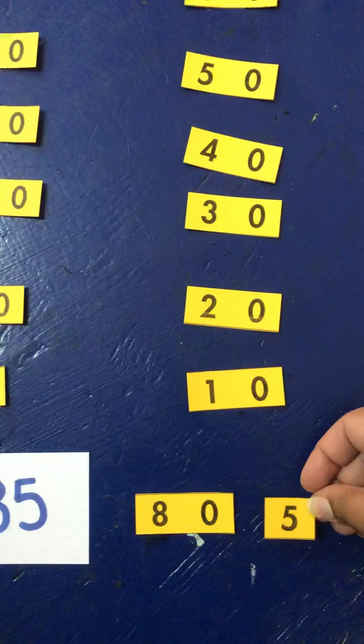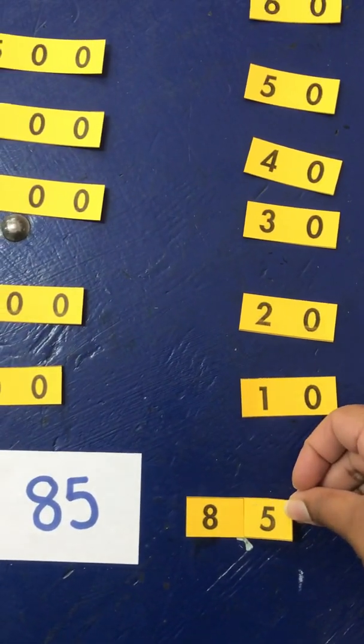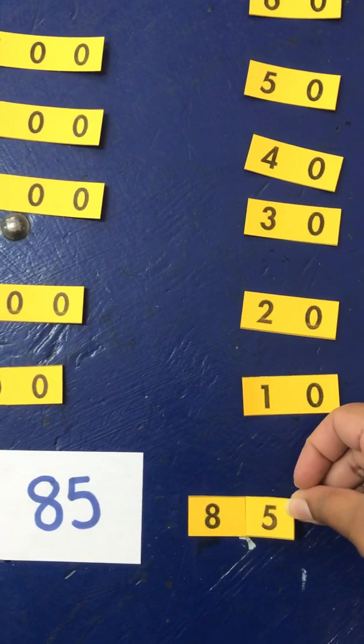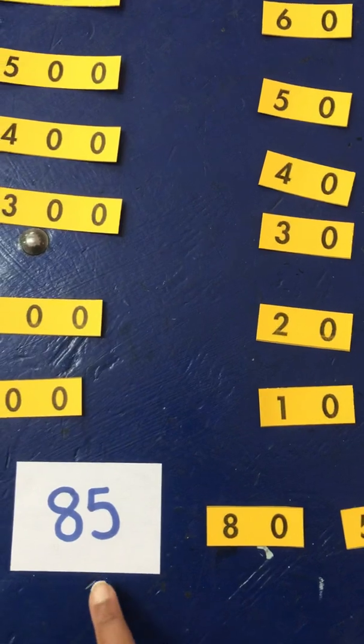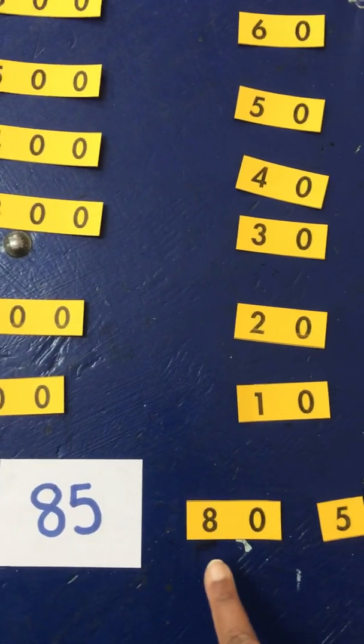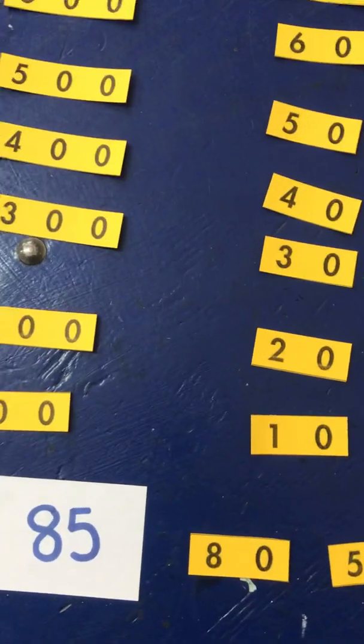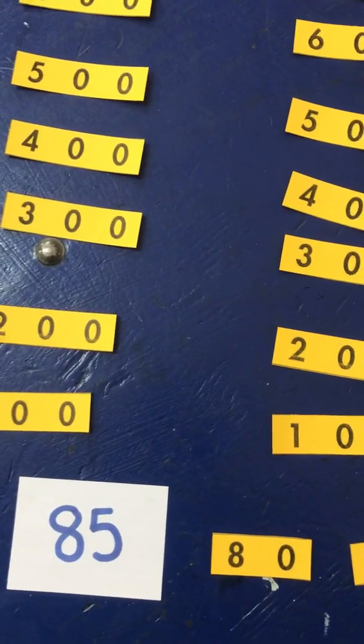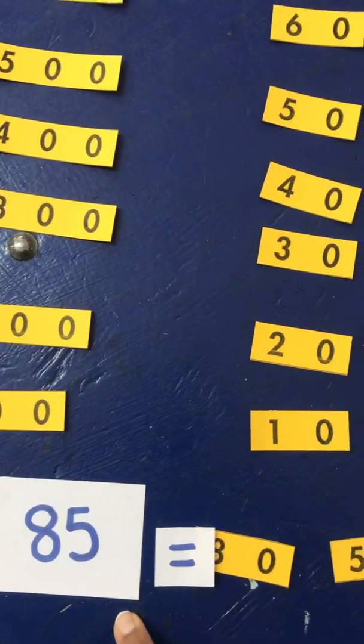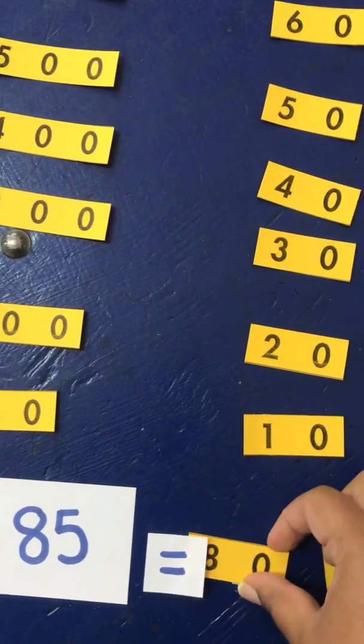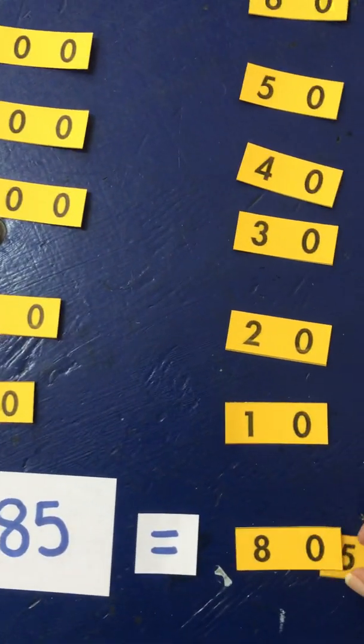These two numbers together will make 85. And when we break them up, they make 80 and 5. So we can say 85 is the same as 80 and 5. Remember when we say the same in maths, we say equal. So 85 is equal to 80 and 5.